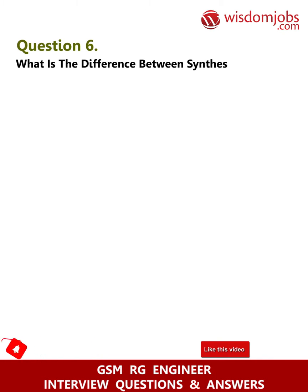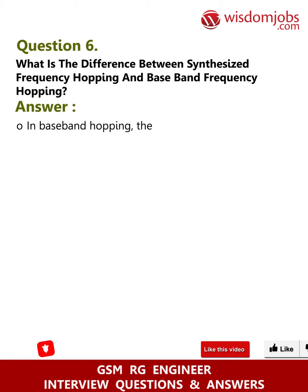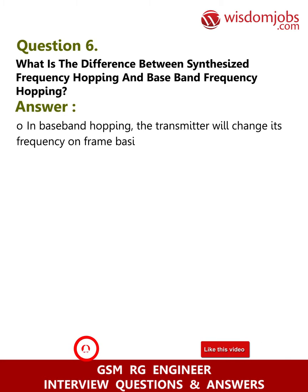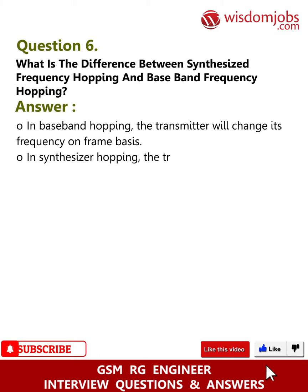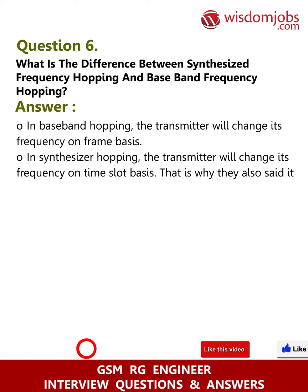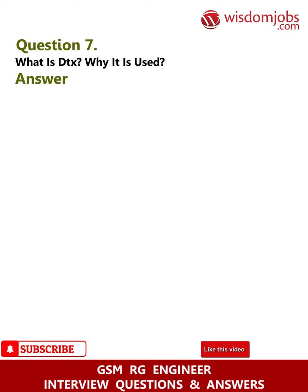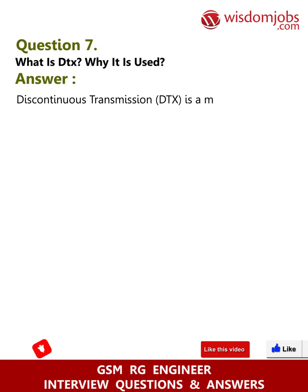Question 6: What is the difference between synthesized frequency hopping and baseband frequency hopping? In baseband hopping, the transmitter changes its frequency on a frame basis. In synthesizer hopping, the transmitter changes its frequency on a time slot basis, which is why it is also called fast hopping.